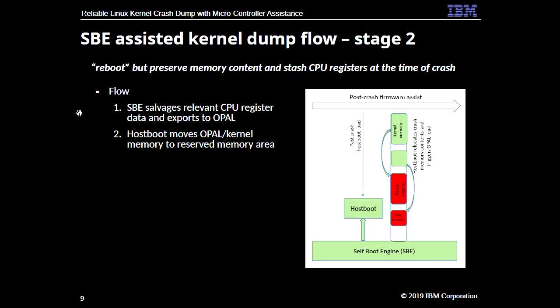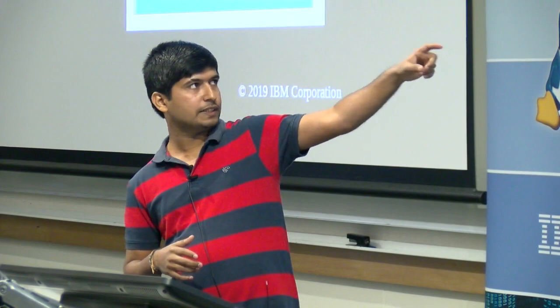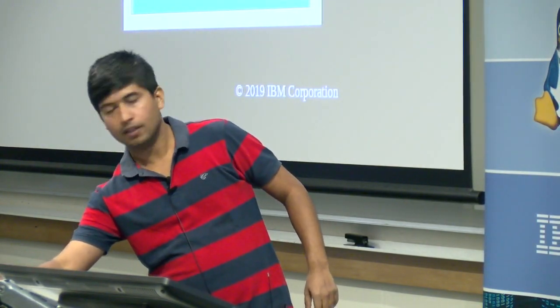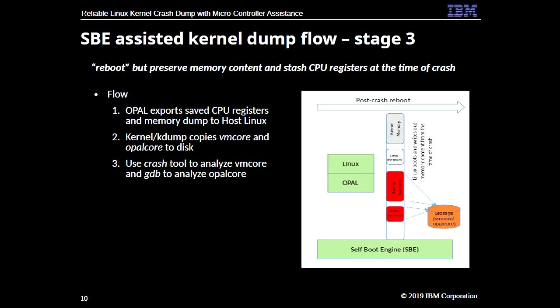Moving to stage 2: once the crash happens, control comes to the self-boot engine. At this stage, the self-boot engine quiesces all the cores and threads, and starts collecting all the register data required for the dumps. Then it loads the new hostboot to the cache and gives it control. Hostboot understands that this is the dump flow and moves the memory contents to the reserved memory. Once it's done, we move on to stage 3 where OPAL is loaded. OPAL exports the preserved memory details and register data to the Linux kernel.